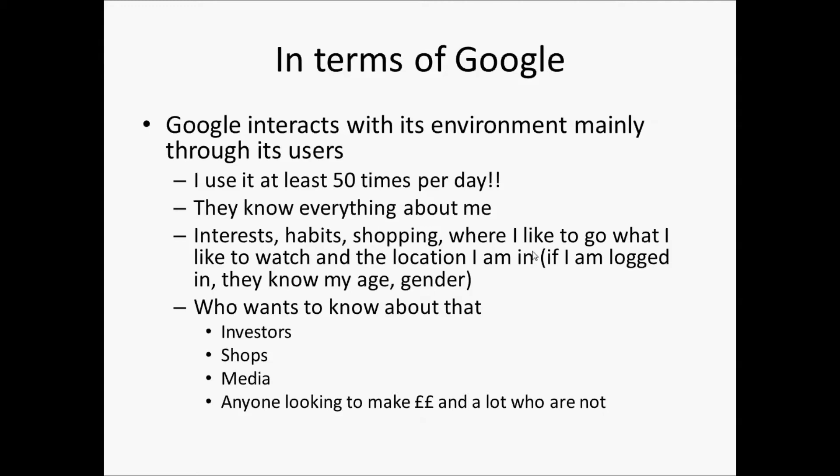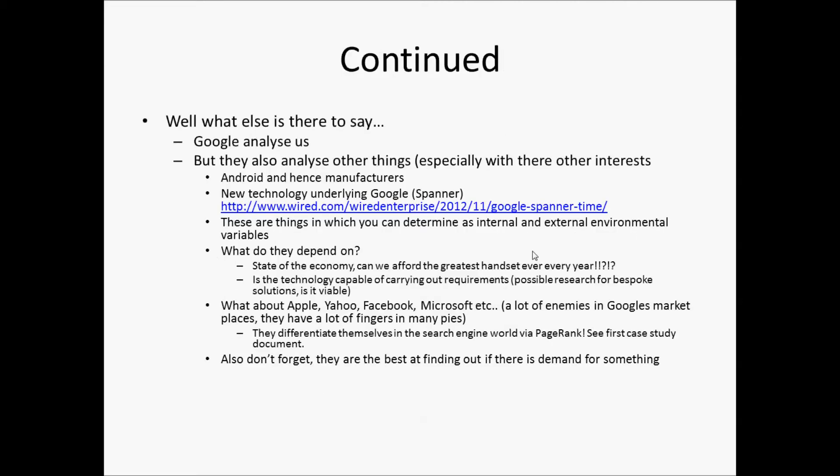Google also analyses other things beyond users - Android mobile phones, their operating system on laptops and television. They interact with manufacturers and analyse what's available, and they look at new technology underlying Google. Where we have external environmental variables, we also have internal variables - for example, if the system is becoming top-heavy, they're thinking they need to change things.